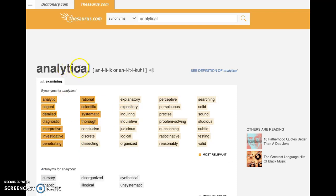So analytical, synonyms for analytical: cogent, detailed, diagnostic, interpretive, investigative, penetrating, rational, scientific, systematic, thorough, inquiring, inquisitive, logical, organized, perceptive, problem-solving, questioning, studious, valid. These all have positive connotations.